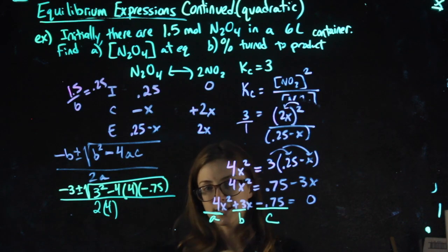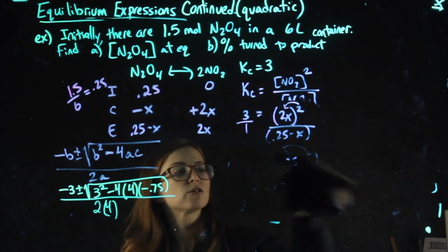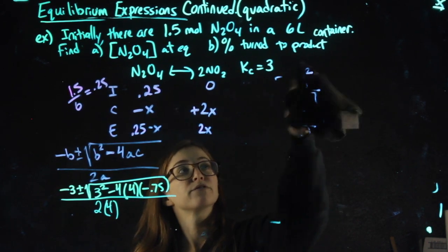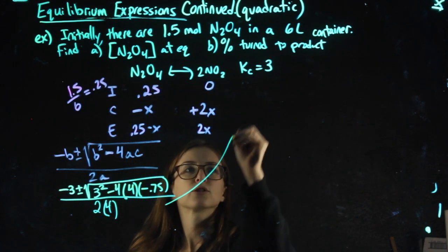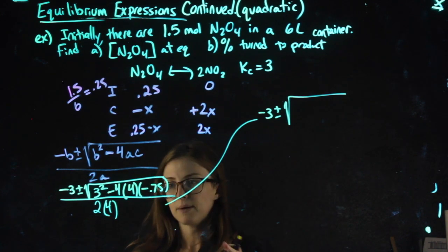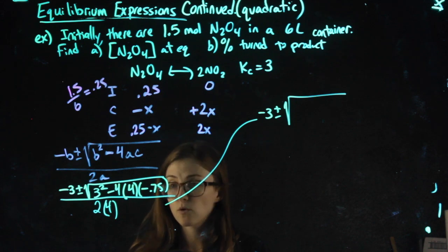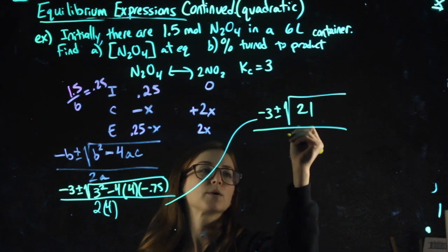I'm going to erase this. What I recommend doing in terms of simplifying this correctly is simplify what's under the square root first, and then the denominator, and then keep going. So negative 3 plus or minus - in my calculator I'm going to type 3 squared minus 4 times 4 times negative 0.75 - 21, all over 2 times 4, which is 8.